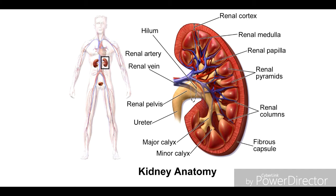The most important organ of excretion is the kidney. The kidney is a dark reddish color and bean-shaped. It is located at the back side of the abdomen. The kidney is 10 to 12 cm in length, 5 to 7 cm in width, and 2 to 3 cm in thickness. Each kidney weighs 150 to 170 grams, with the female kidney weighing 125 to 145 grams.